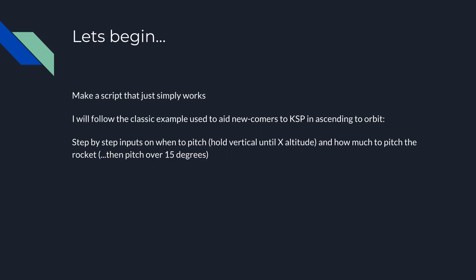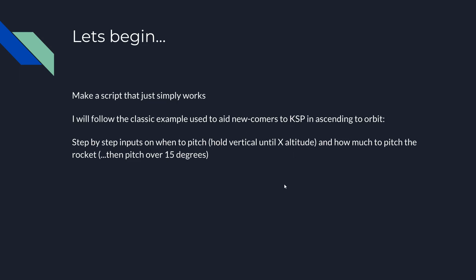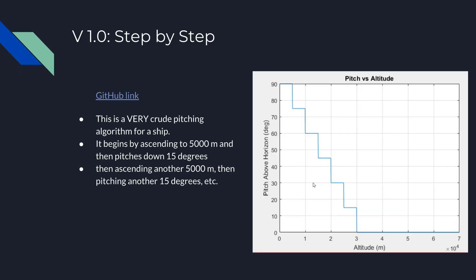The very first thing I ever did was create a script that was very simple — just step by step. I'm sure you've seen tutorials on how to get into orbit with KSP. There's a very simple approach: once you get to a certain altitude, pitch over a certain amount — like 30 degrees at 10 kilometers, then pitch over to 45 at 20 kilometers, stuff like that. That's essentially the first step.